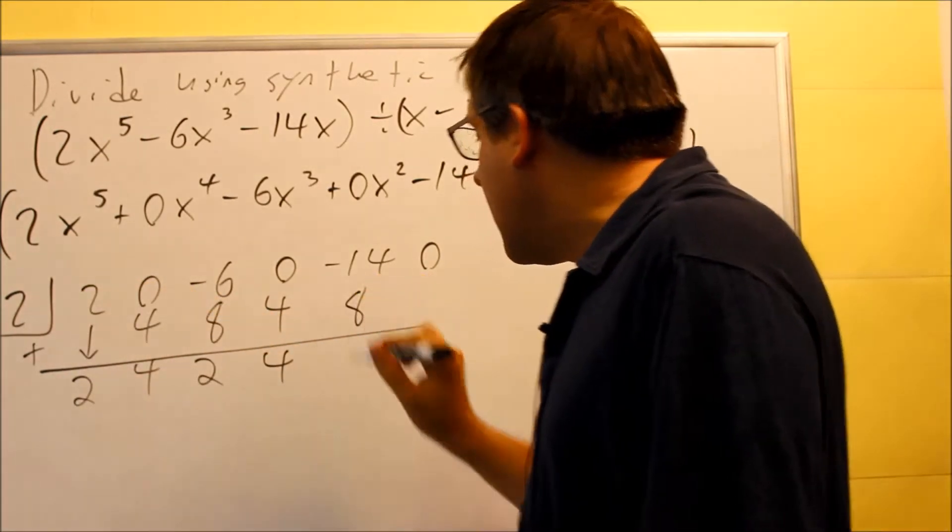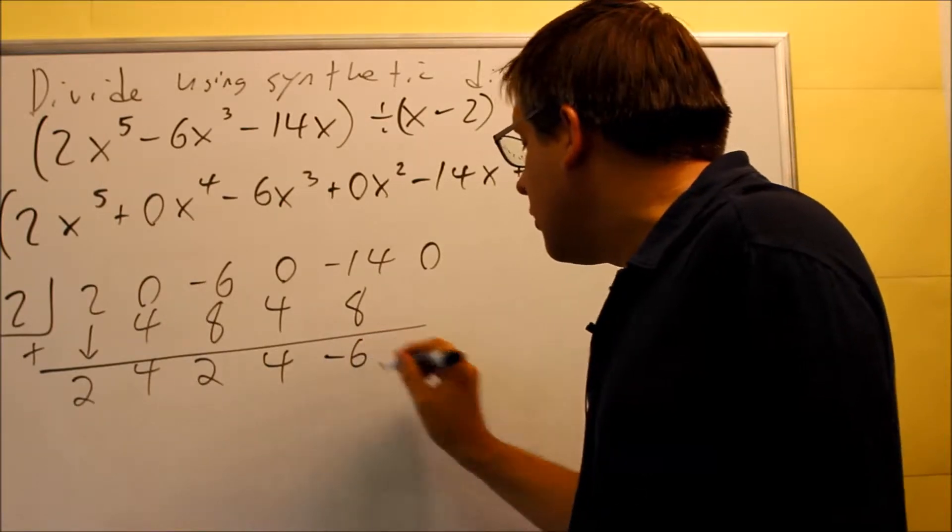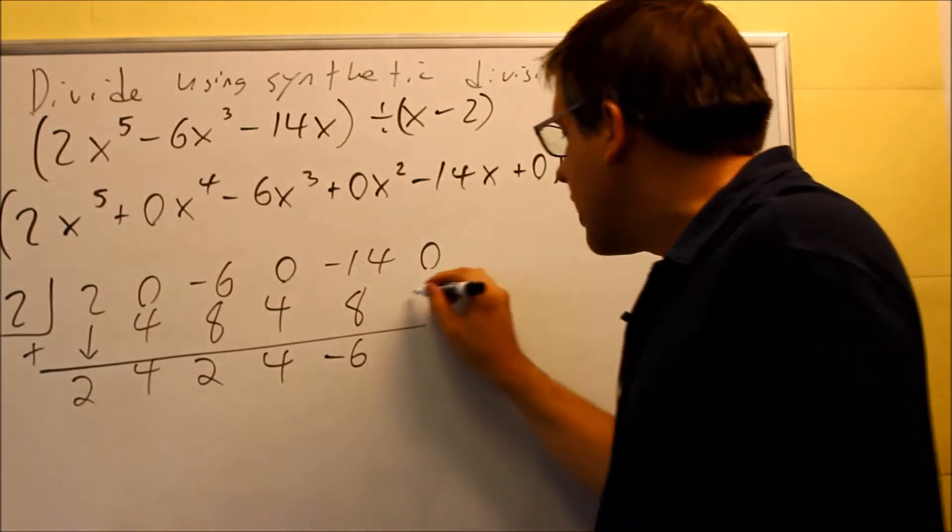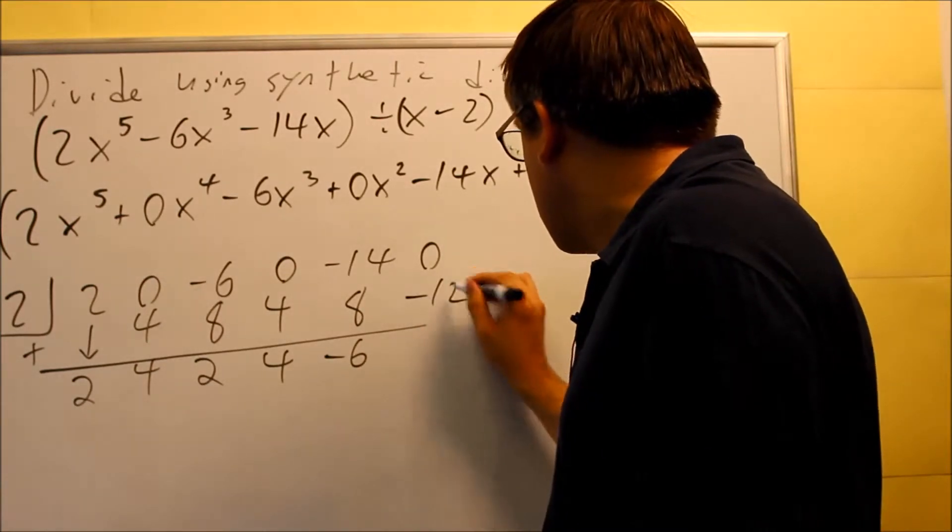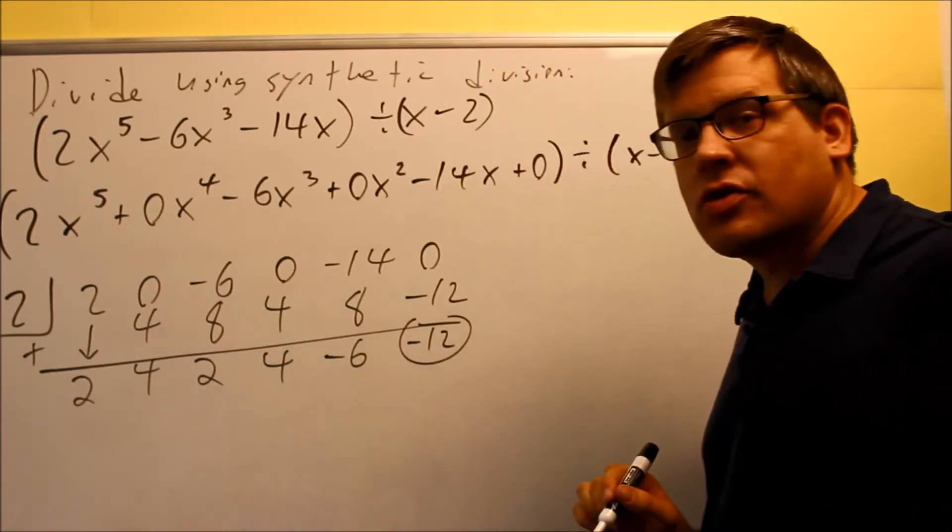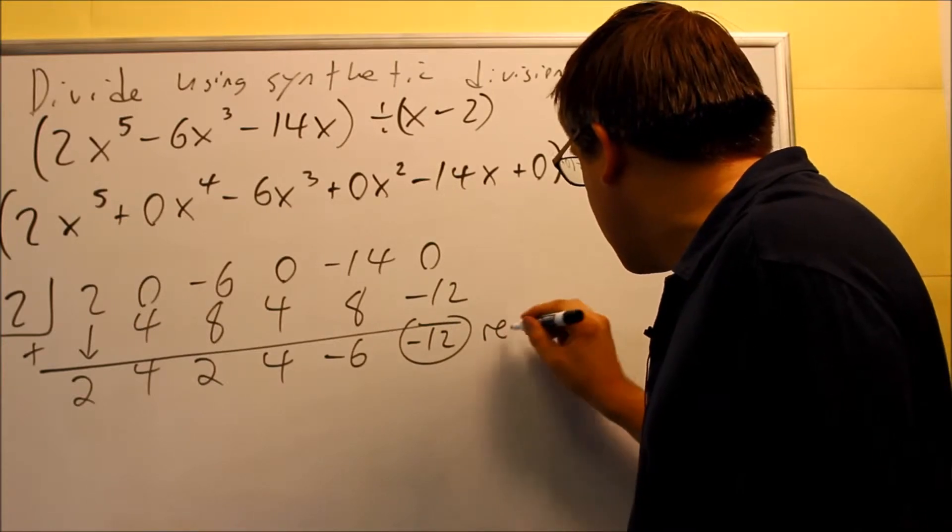Multiply that, you get 8. If you add that together, negative 14 plus 8 gives you negative 6. We have to do one more to get our remainder. Negative 6 times 2 is negative 12. Add that together, and you get negative 12 as your answer. This one on the end, that's always going to be your remainder. So that's that part right there.